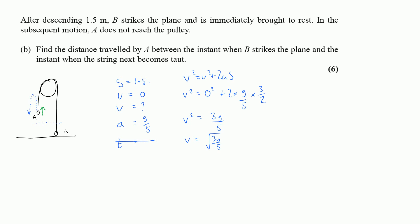I won't calculate √(3g/5) as a decimal — and you'll see why shortly. Now I set up a new SUVAT problem to find how far A travels after B hits the ground. I halve the problem: I'll find the distance to the highest point where v = 0. Under these conditions B is no longer acting on A, so A moves freely under gravity with acceleration = −g. Again I don't need time.